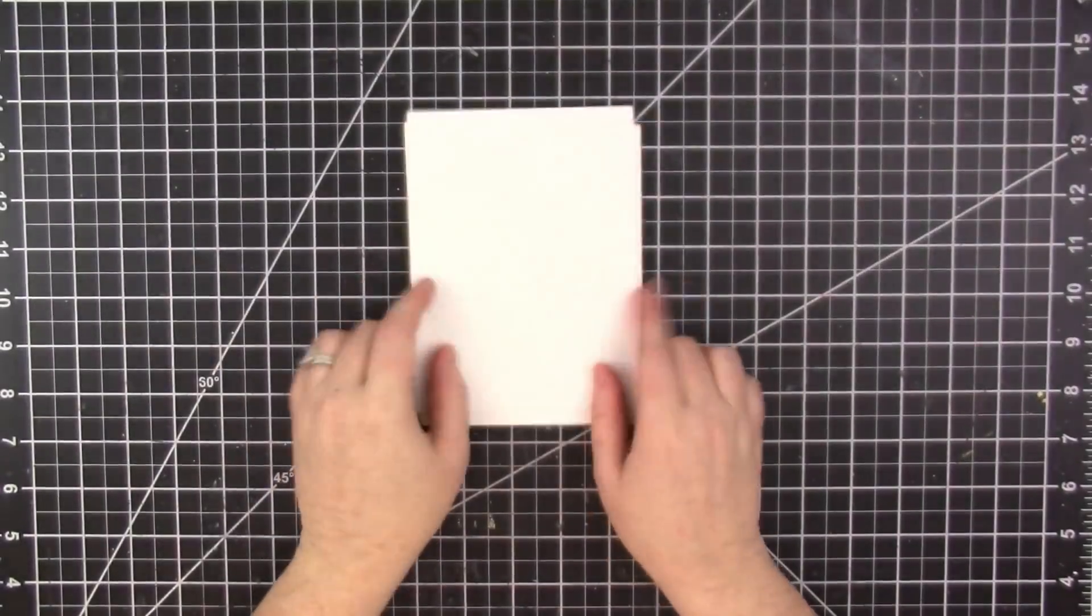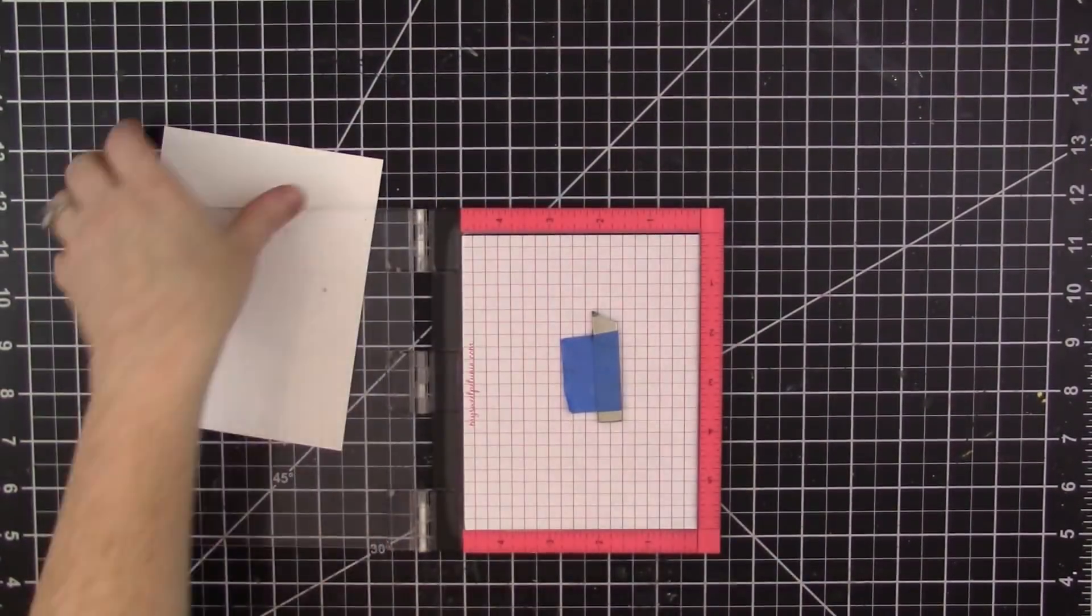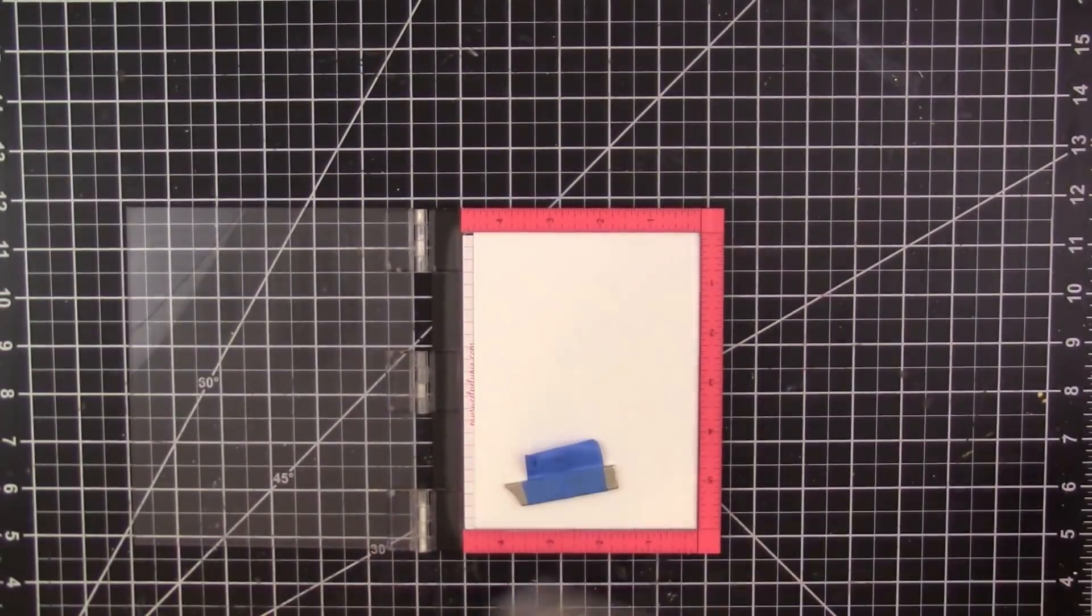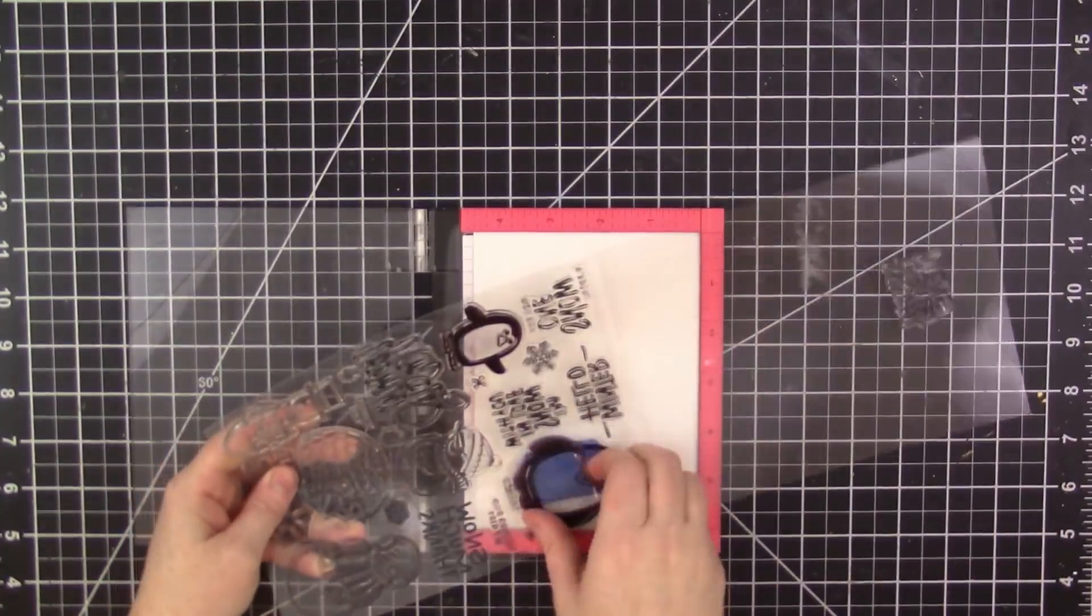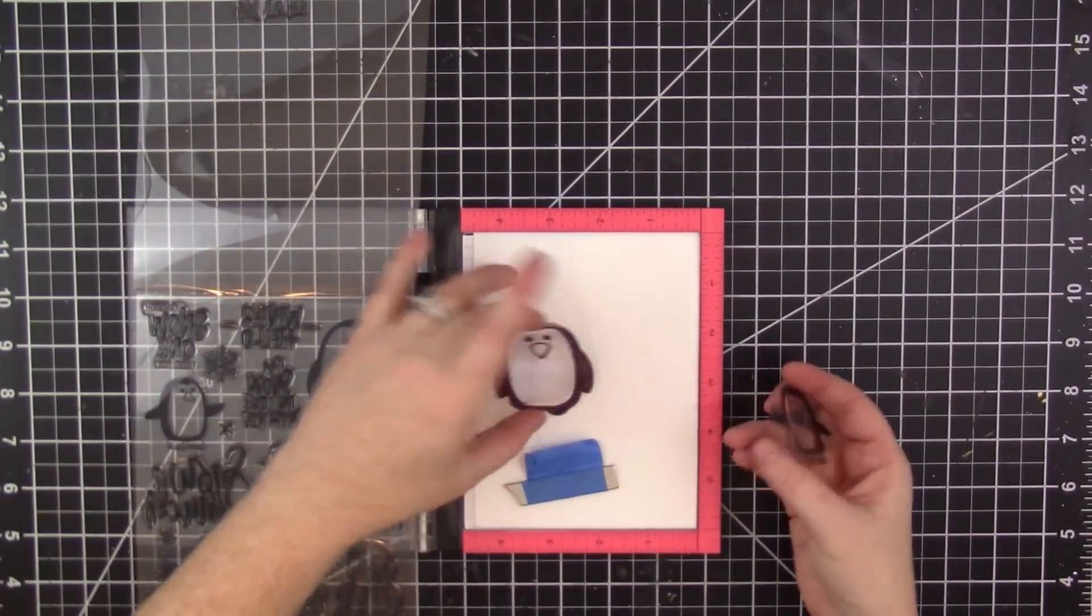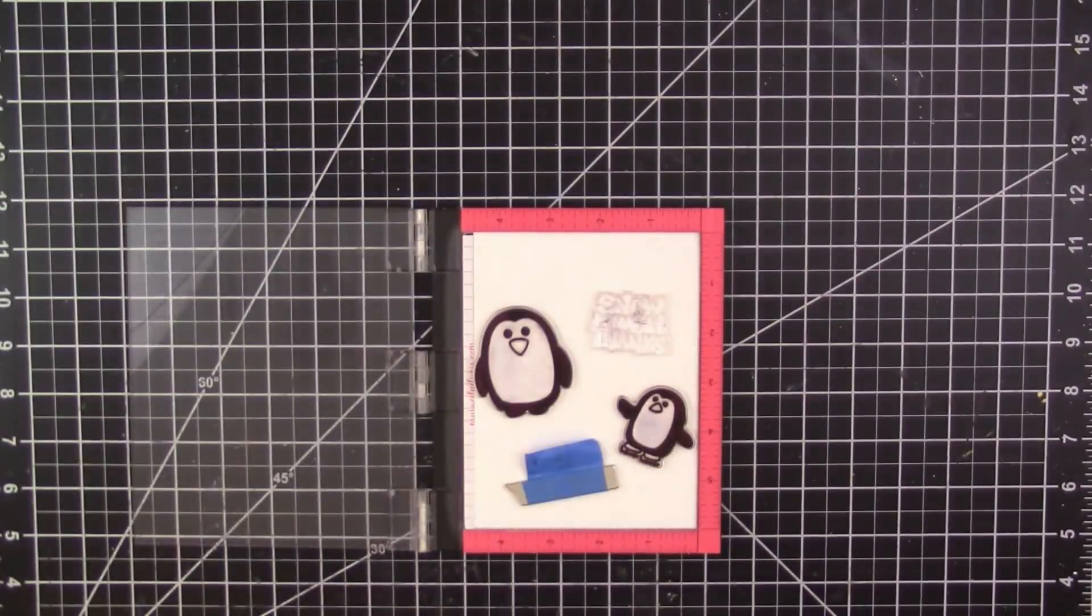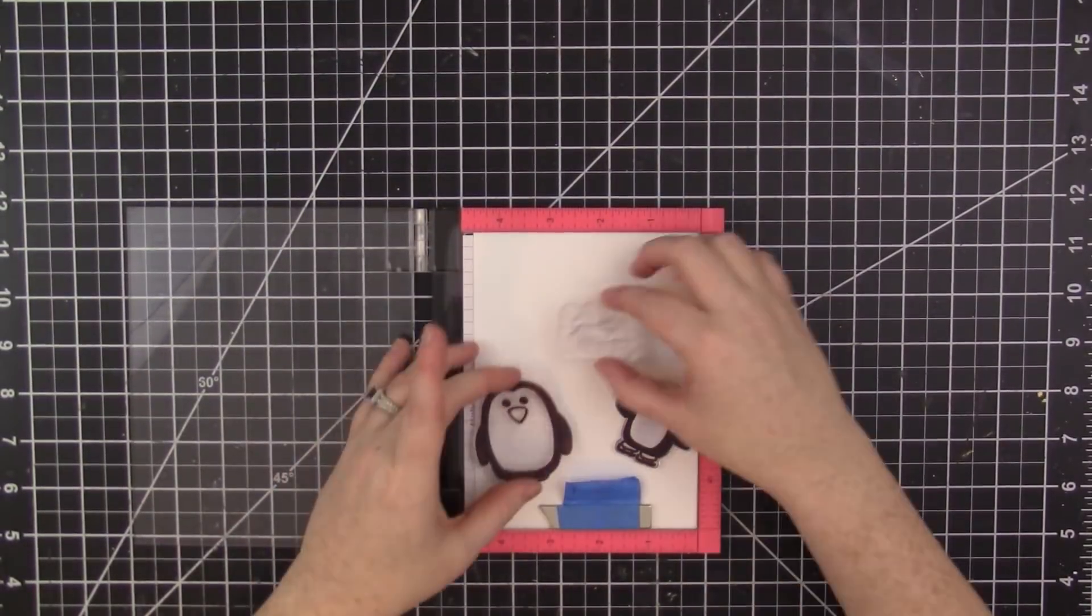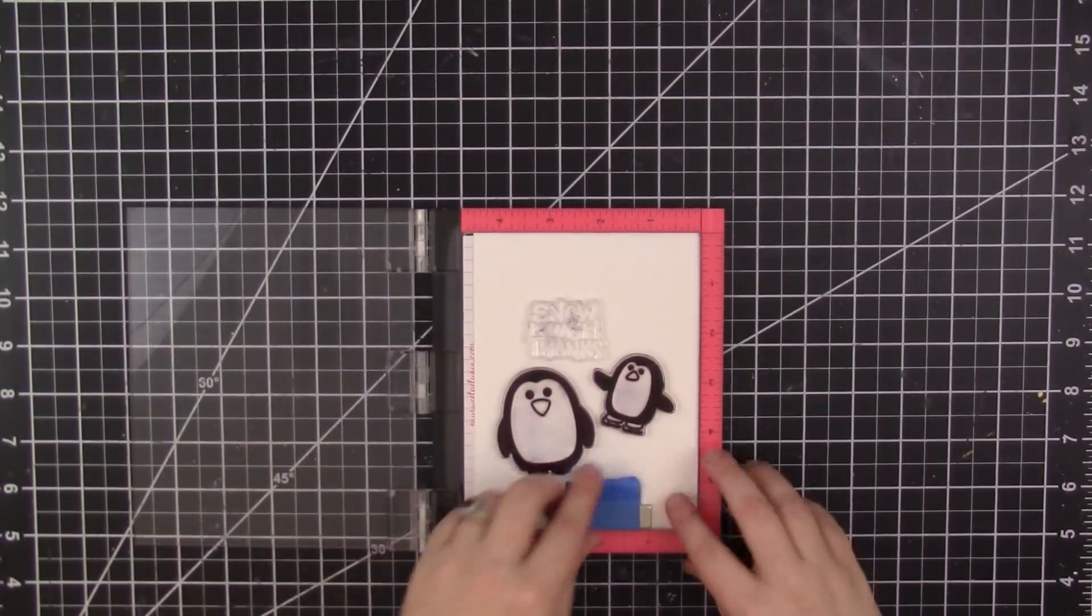I'm going to be watercoloring, so this cardstock is a nice thick 140-pound cardstock. It holds up really nicely even if you use a lot of water.